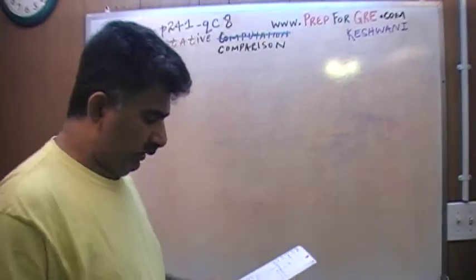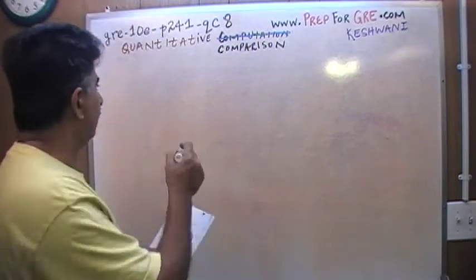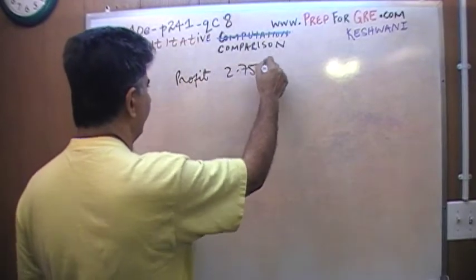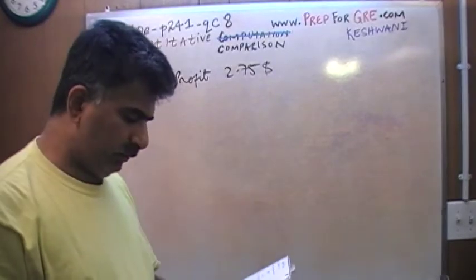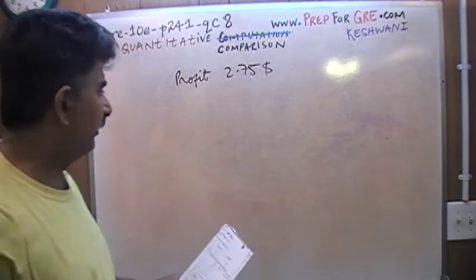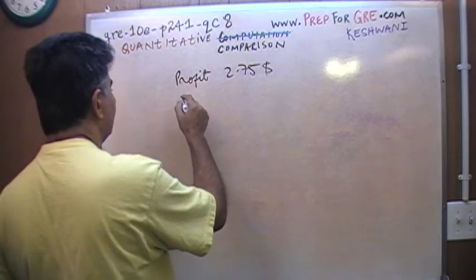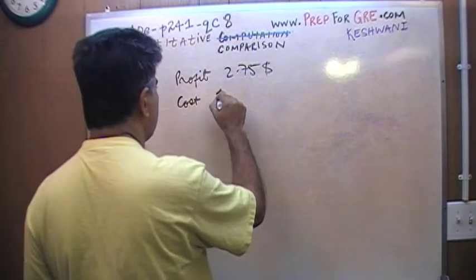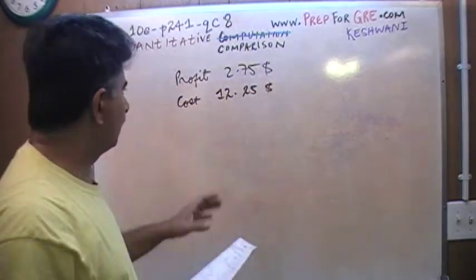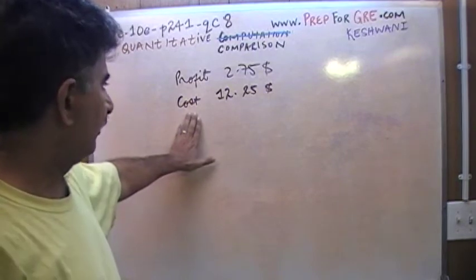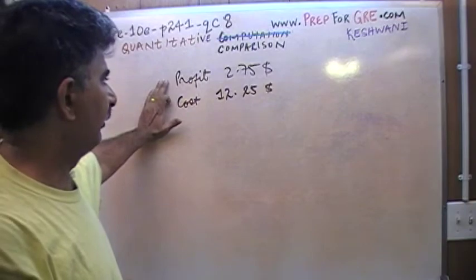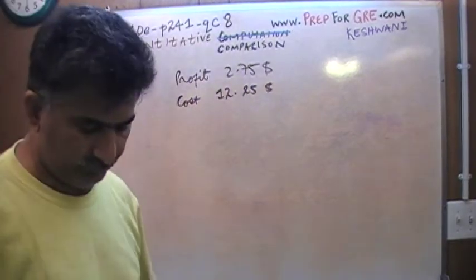It says a merchant made a profit of $2.75 on the sale price of a sweater that cost the merchant $12.25. So the sweater cost him this much, and then he turned around and sold the sweater, on which he made a profit of $2.75, so obviously he sold it for about $15.